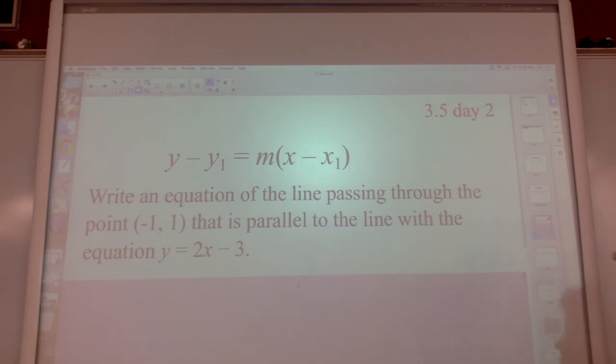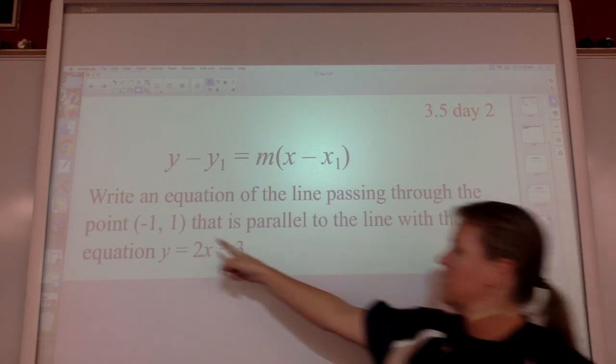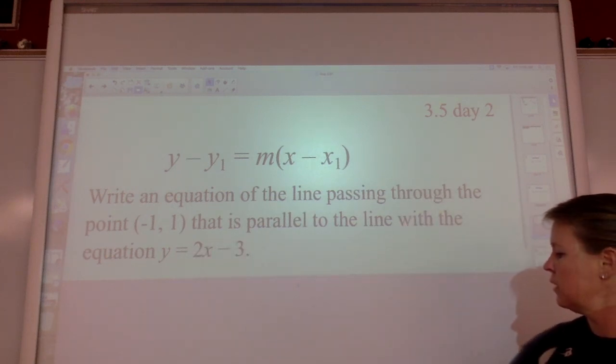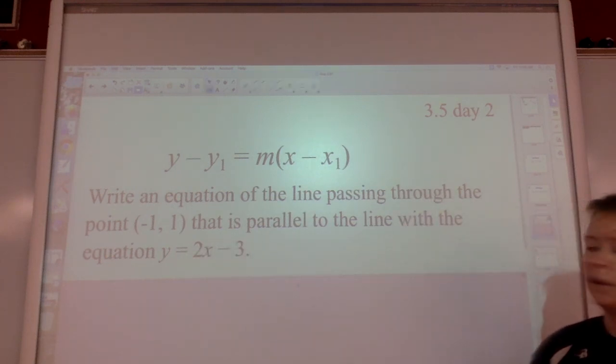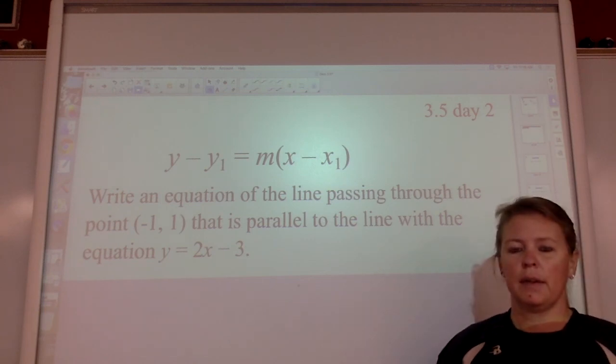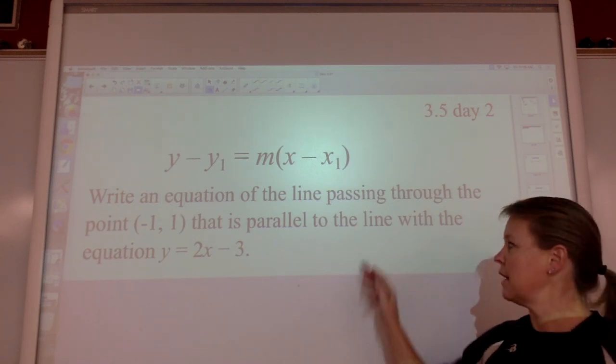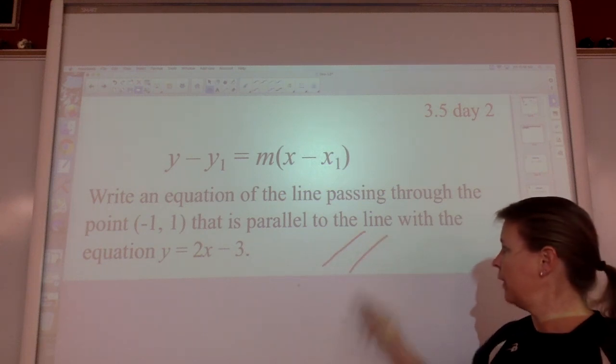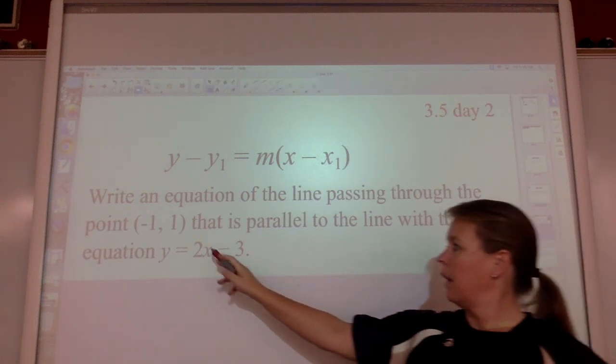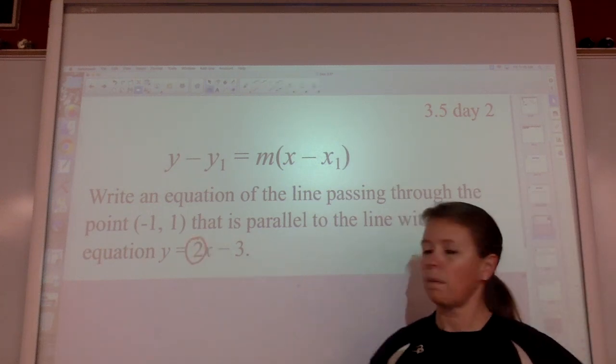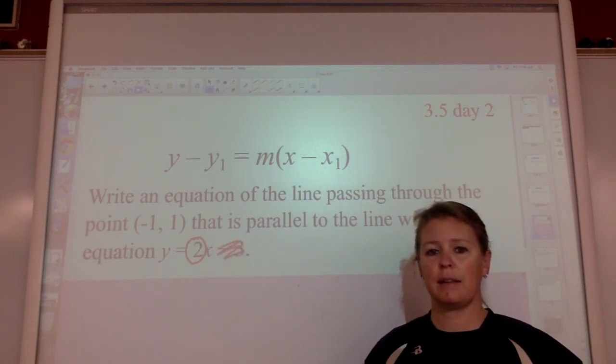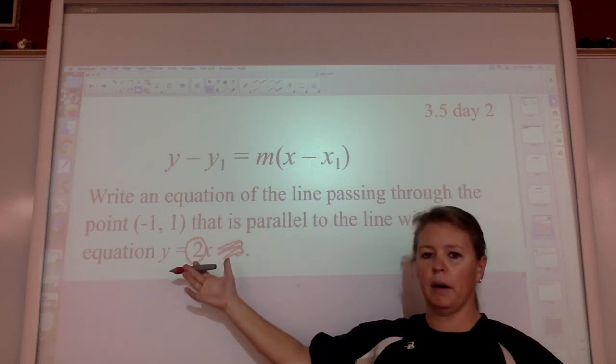Write an equation of the line passing through the point negative 1, 1. So here's our x₁, y₁. That is parallel to the line of the equation. We talked about parallel, and parallel lines have the same exact slope. Two lines that are parallel must have the exact same slope. They'd have the same rise, same run, to keep them on the same angle. So we have slope of 2.